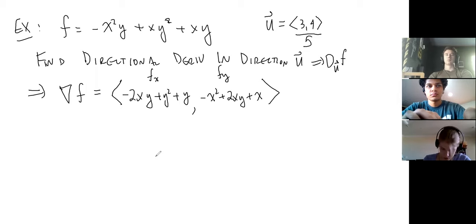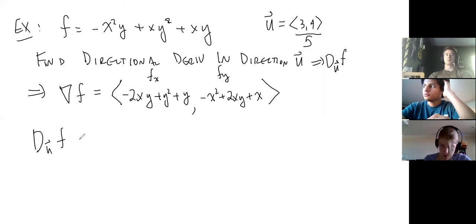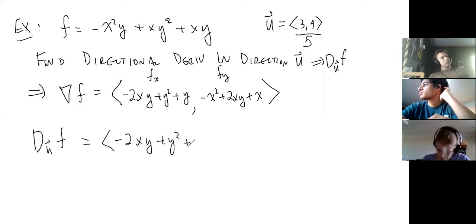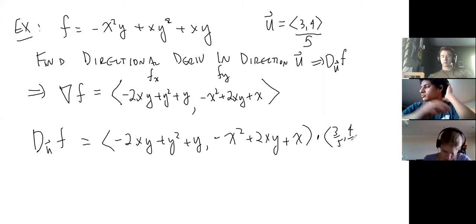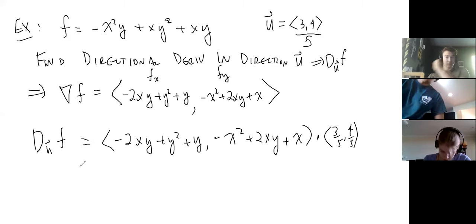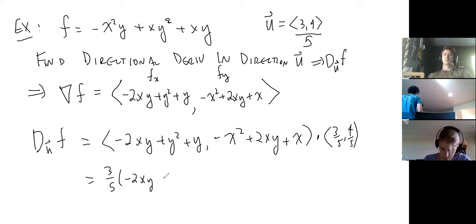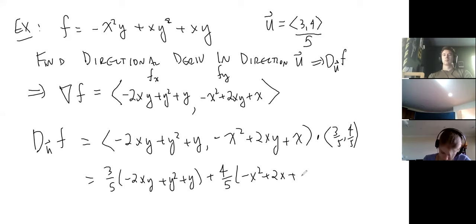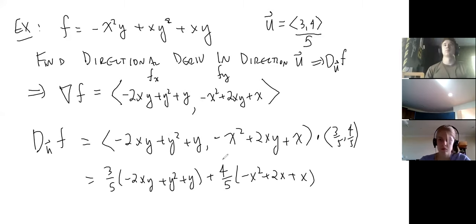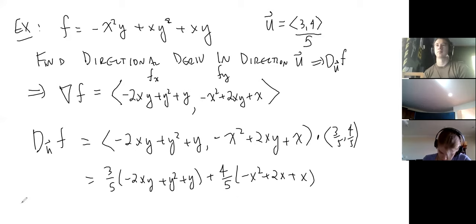Now take the dot product of the gradient with u. The directional derivative is (-2xy + y² + y, -x² + 2xy + x) dotted with (3/5, 4/5). Multiplying out: three-fifths times (-2xy + y² + y) plus four-fifths times (-x² + 2xy + x). It's split between the x-derivative times the x-component of u, and the y-derivative times the y-component of u.